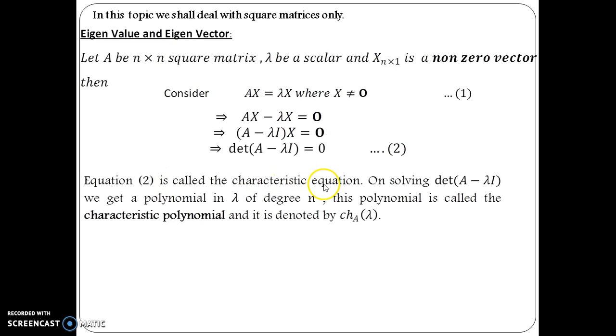So, this builds up our theory now further: this equation det(A - λI) = 0 is what we are going to call the characteristic equation. Equation 2 is called the characteristic equation, and when we solve this determinant, we obtain a polynomial of degree n in λ. And this polynomial is known as the characteristic polynomial. We generally denote it by ch_A(λ).